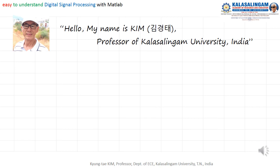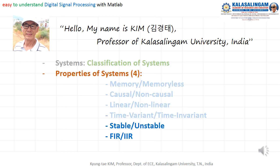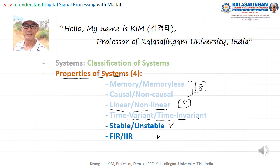Hello, my name is Kim, Professor of Kalashanagam University, India. Today's topic is the 4th lecture of Properties of Systems. Today's topics are Stable and Unstable systems, and FIR and IIR systems. I already have given lectures on these in lecture number 8. For Linear and Non-Linear Systems, that was lecture number 9. And Time Variant and Time Invariant, you can review those. This is the final lecture for the Properties of Systems.